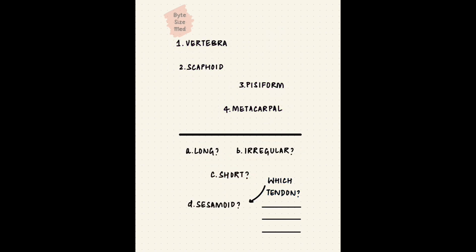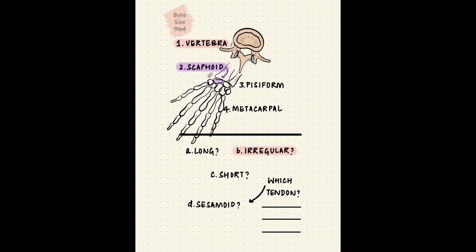Time's up. The vertebra is an irregular bone, that one's easy. The scaphoid is a short bone, as are all the carpal bones. The pisiform, which is a carpal bone, is a sesamoid bone. And the metacarpal, though it looks short, is a long bone because the length is more than the breadth. Lastly, the pisiform bone is in the tendon of flexor carpi ulnaris.